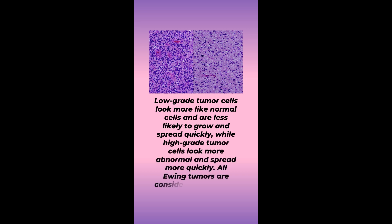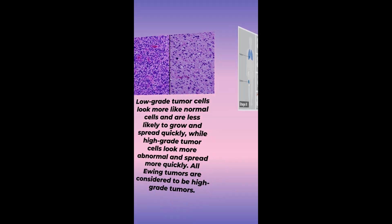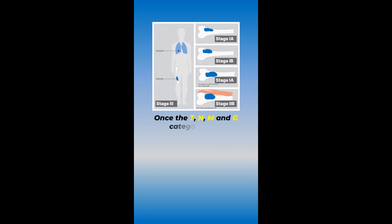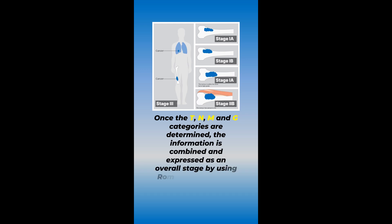All Ewing tumors are considered to be high-grade tumors. Once the T, N, M, and G categories are determined, the information is combined and expressed as an overall stage using Roman numerals one to four, and are sometimes further divided within.